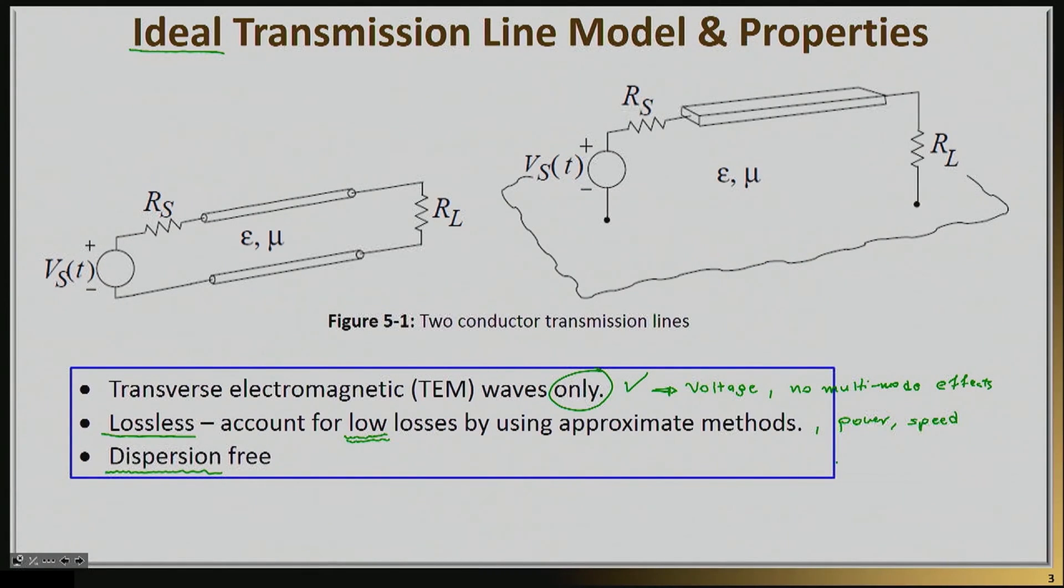And that's critical because if there is any dispersion, you will find out that frequencies will have different phase velocities which will actually lead to group delays. So these are the three main features that define our transmission line model.